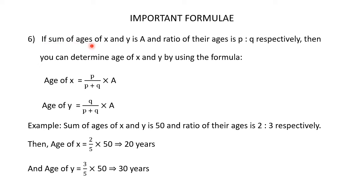If sum of ages of x and y is A and ratio of their ages is p is to q respectively, then you can determine the age of x and y by using the formula. Age of x is equal to p divided by p plus q multiplied by A. Age of y is equal to q divided by p plus q multiplied by A.